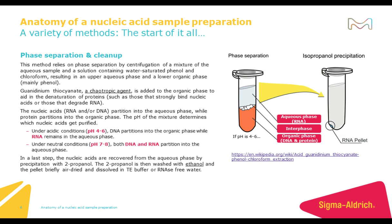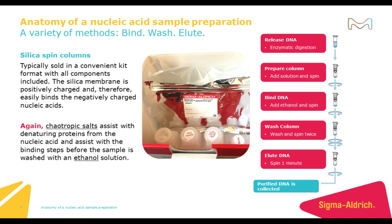Under neutral conditions, such as those between pH 7 and 8, both DNA and RNA will partition into the aqueous phase. That aqueous phase is then collected and followed by an ethanol or isopropanol precipitation to clean up the organic solvents used to isolate the nucleic acid from the sample lysate. These organic solvents can also have downstream impact on downstream applications. The nucleic acid is finally crashed into a pellet using a salt and washed multiple times with ethanol or isopropanol before resuspending in a storage buffer.